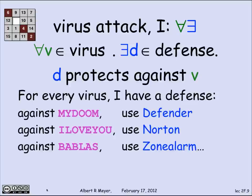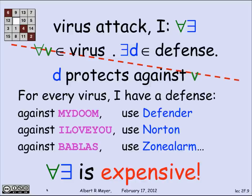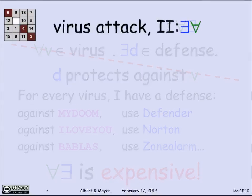So an example would be: against the MyDoom virus you could use Defender, Microsoft Defender. Against the I Love You virus you could use Norton. Against the Bobliss virus you could use Zone Alarm. Well, is that what we want? It's expensive. It means that for every different virus, I need a different defense. I have to spend a fortune on software. This is not what we want. So that's when for every virus there's a defense, but the quantifiers are in the wrong order.